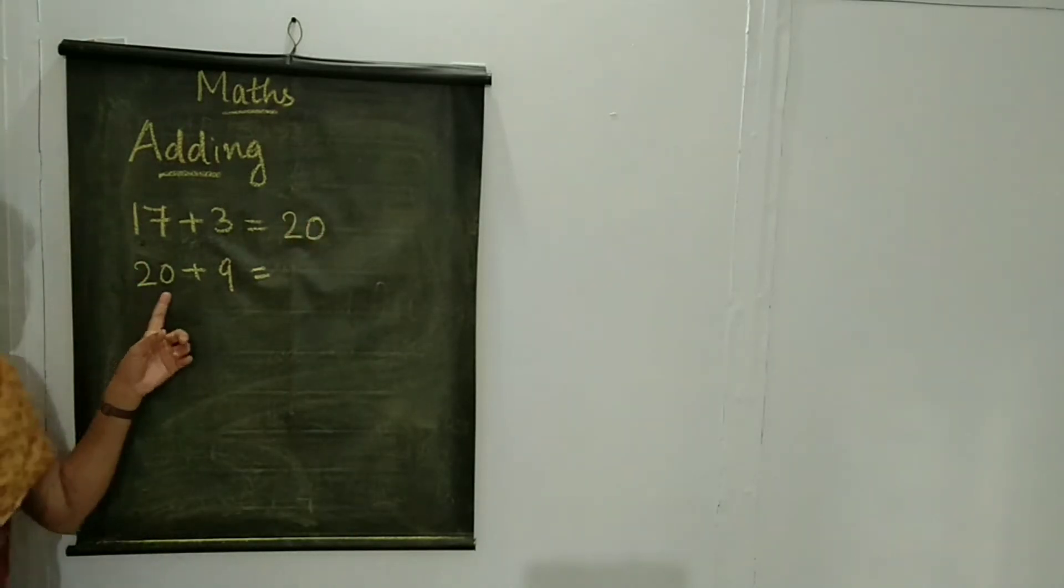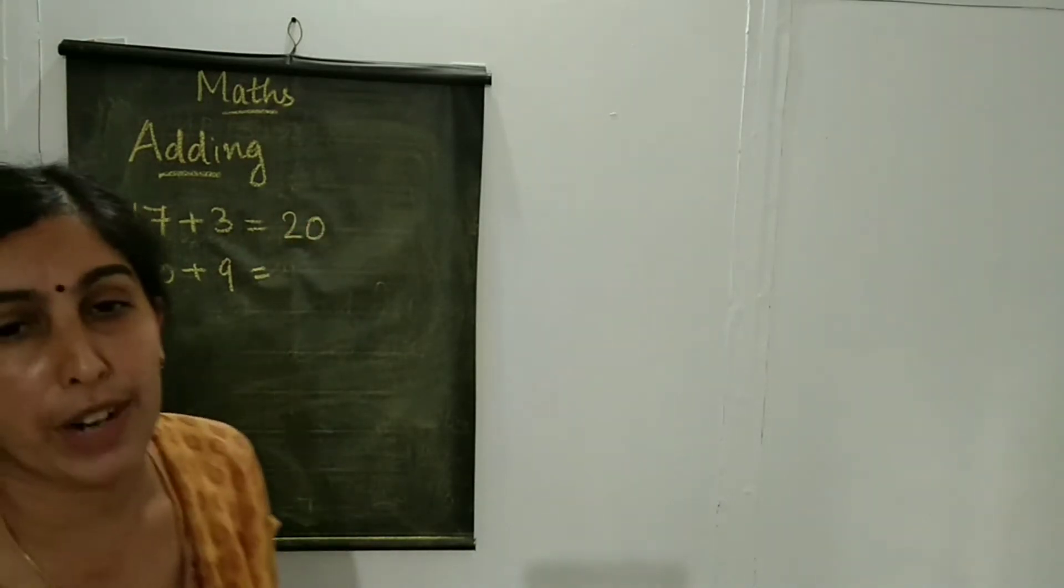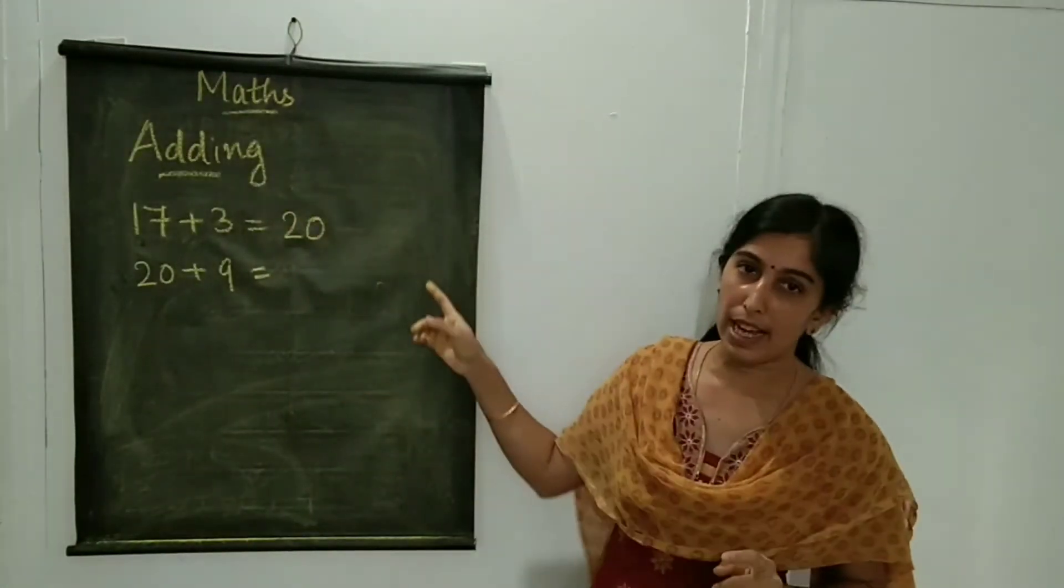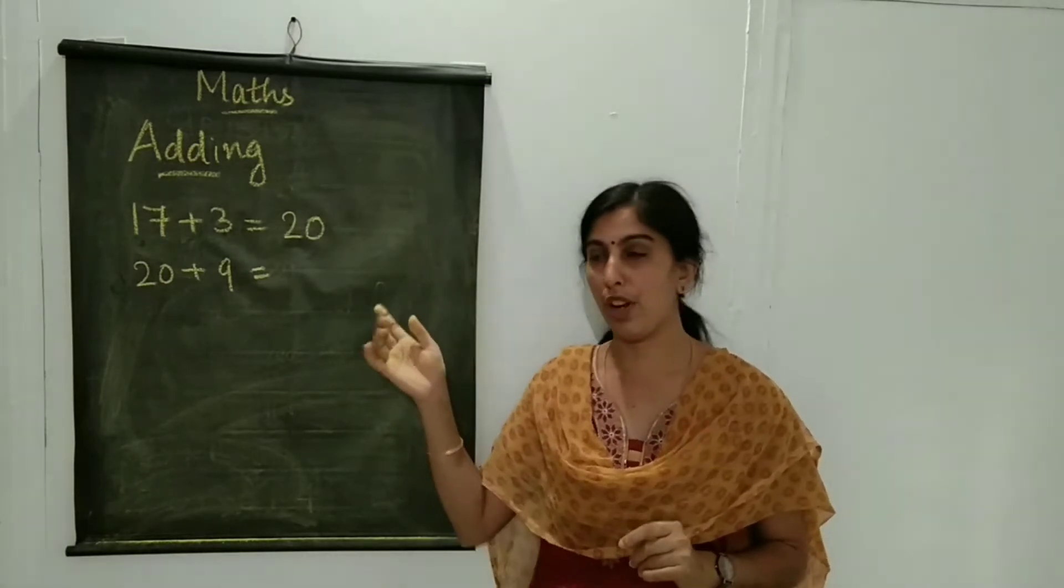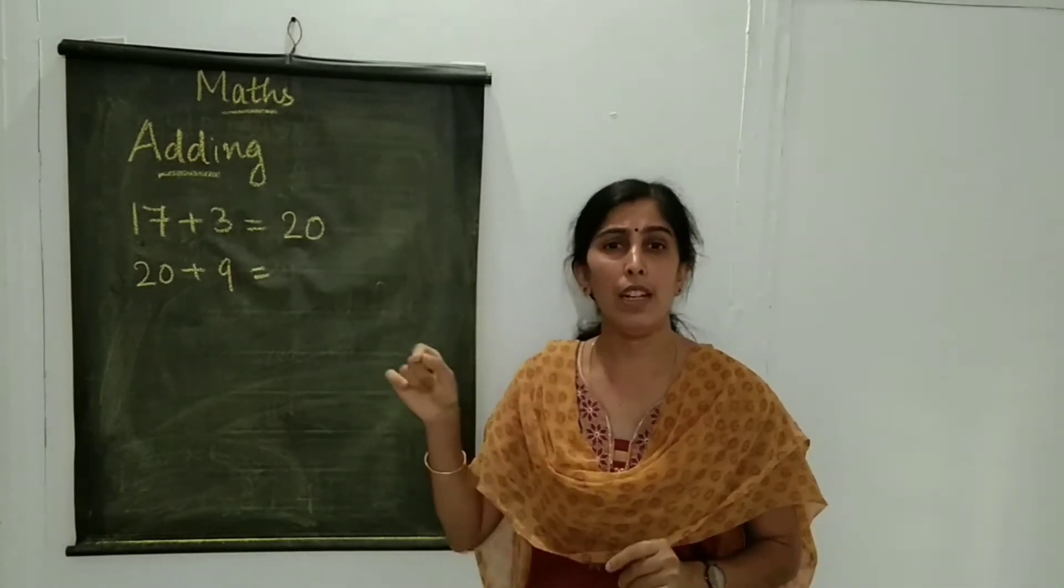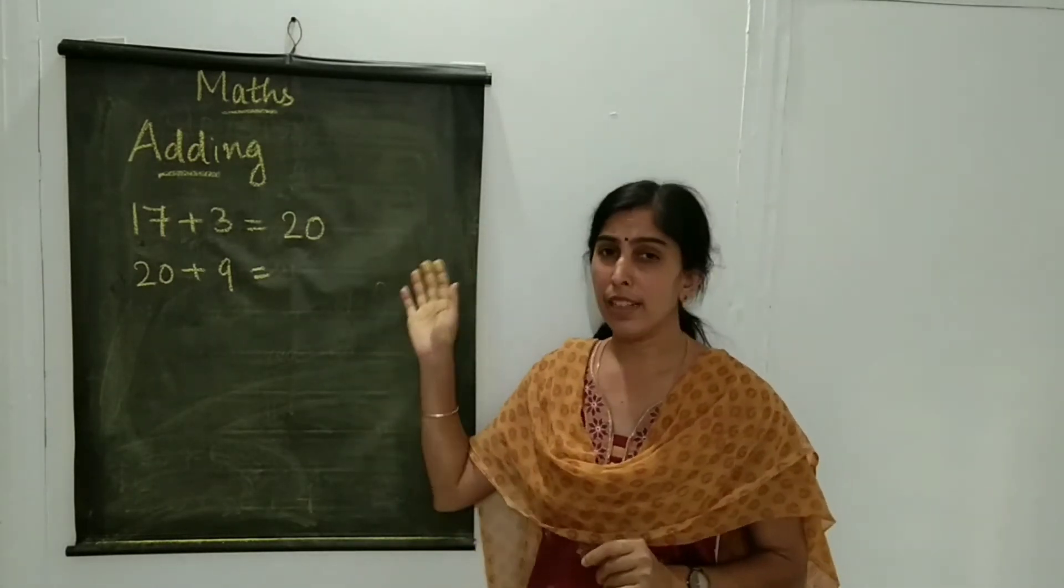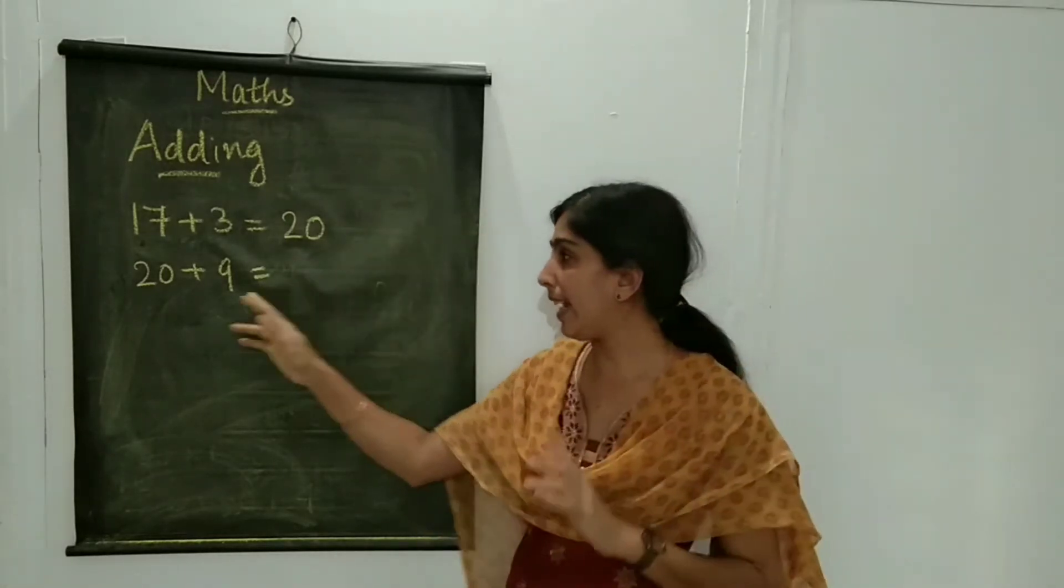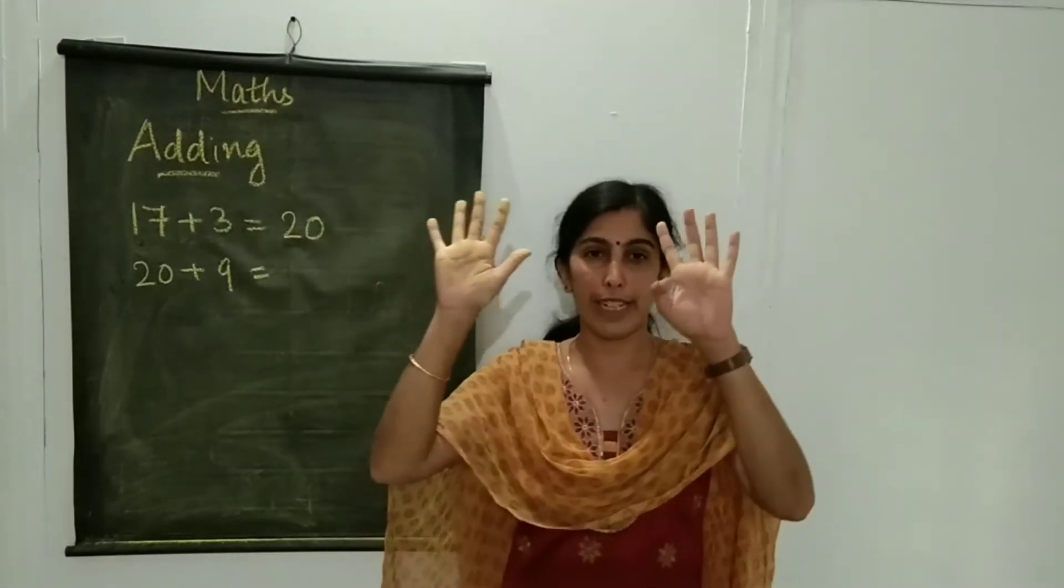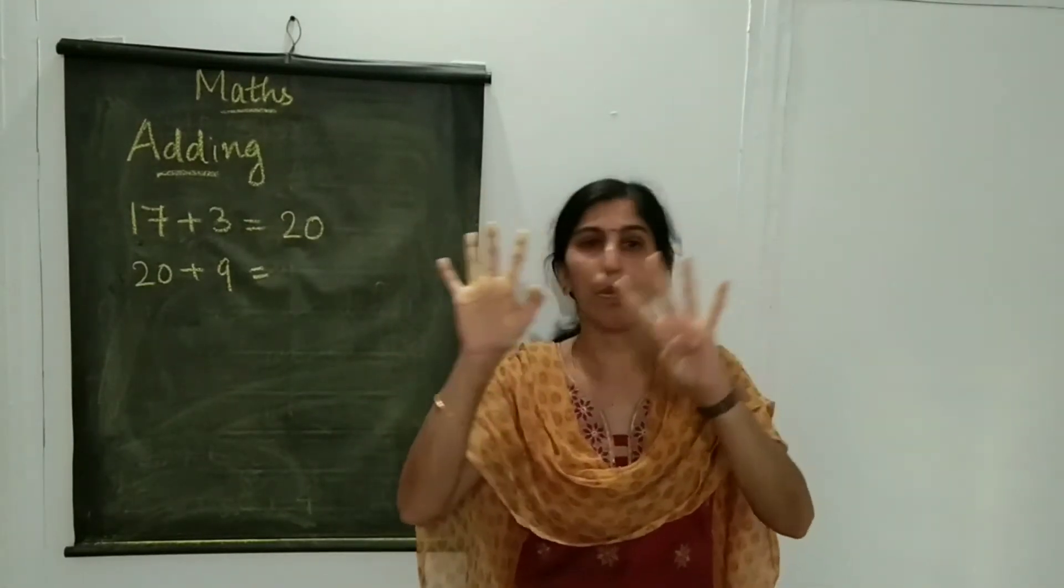Then next is 20 plus 9. If you want to use the number chart, you can look at the number chart behind your notebook. You have already written in your notebooks. If you want, you can look at that. Otherwise, you can use your fingers. 9, in case you take 5 plus 4.